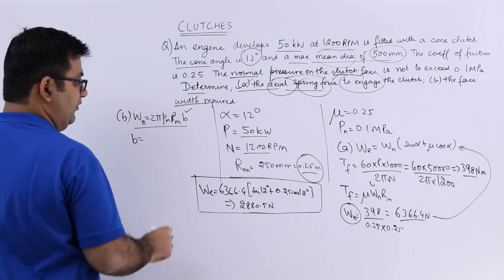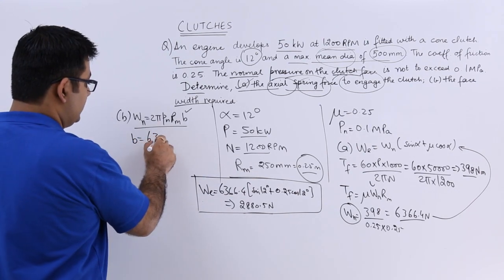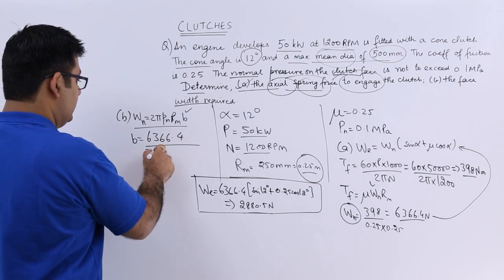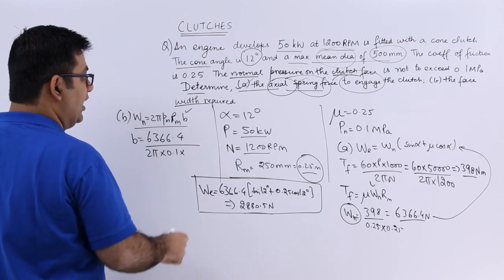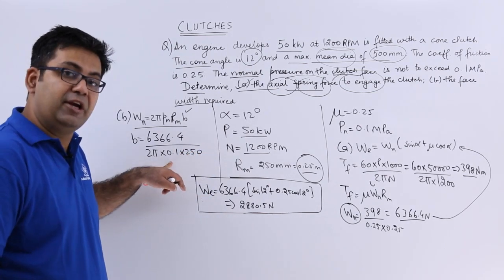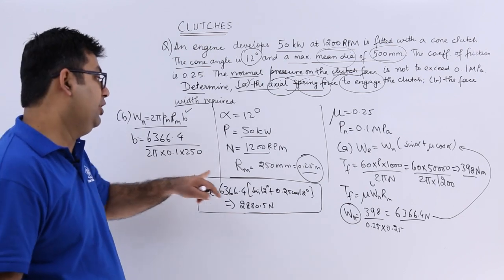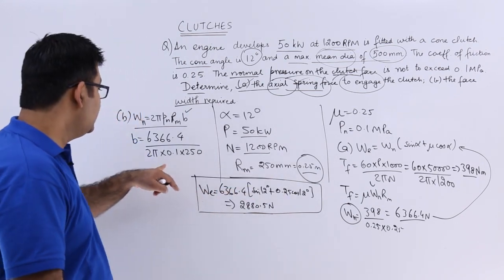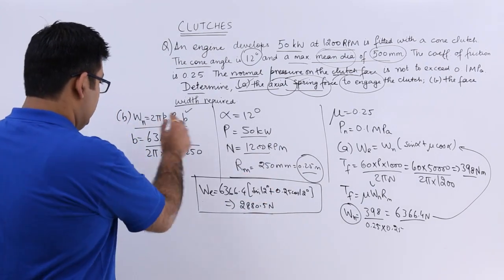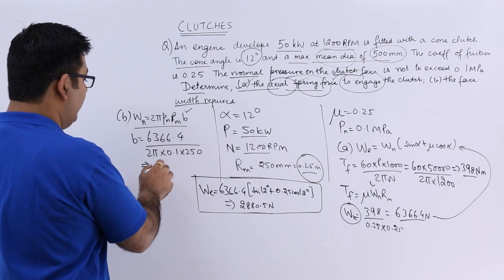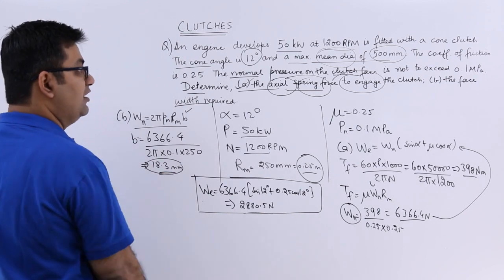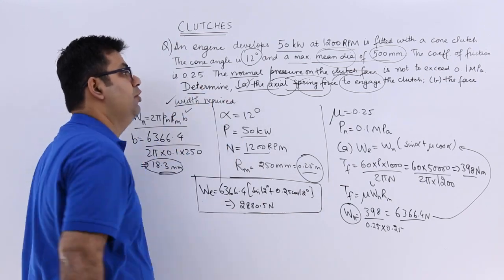So B is equal to WN which is 6366.4 by 2 pi into PN is 0.1 into Rm is how much? 250. See, if you are converting 0.1 into pascals then you need to get this into meters. If this is in MPa then this can be in millimeters. So this would give you a B value of 18.3 millimeters. So this is the width of the face of the cone.